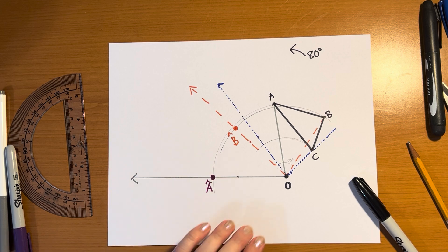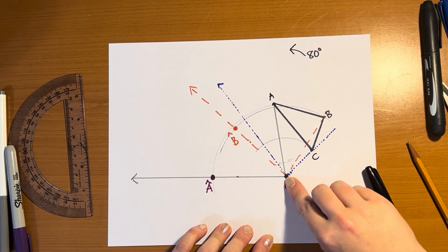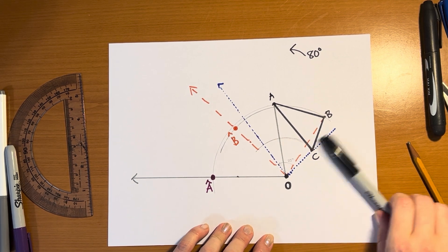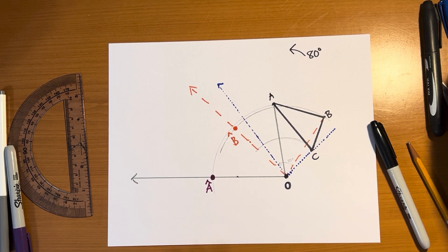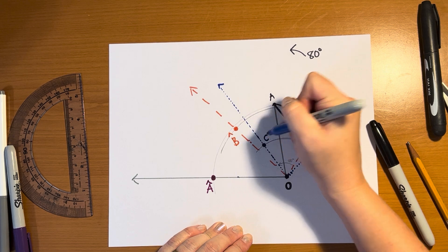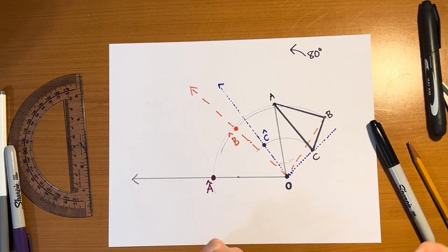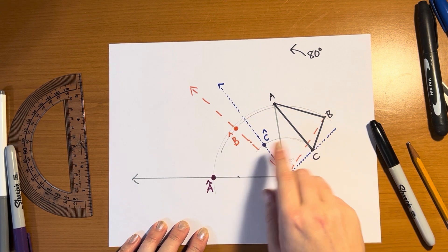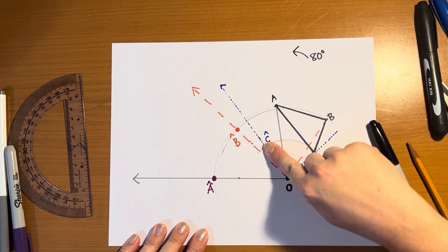now every point on this circle is the same distance from C, from O to C. And so the intersection here of my dotted line and the circle should be where the image of C ends up. So now I've rotated A over here, B over here, and C over here.